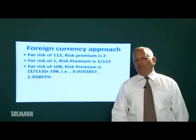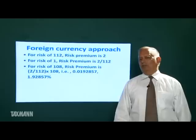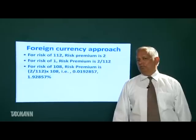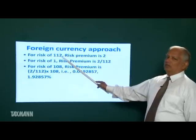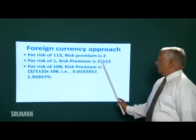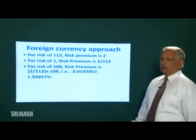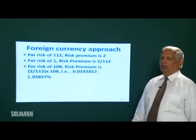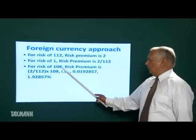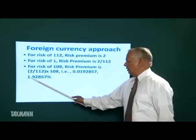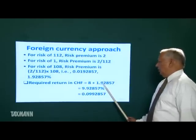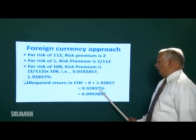If we invest 100 rupees in India in risk-free, we certainly get 112. If we invest in business we hope to get 114, but it may be even 0 — so we are taking risk of 112, and against that risk we have a risk premium of 2. In Switzerland, if you invest 100 in risk-free, you are sure to get 108, and if you invest in business it may be even 0, so you are taking risk of 108. The risk premium should therefore be 1.92857%. So the required rate of return in CHF equals 8% (risk-free) + 1.92857% (risk premium) = 9.92857%.